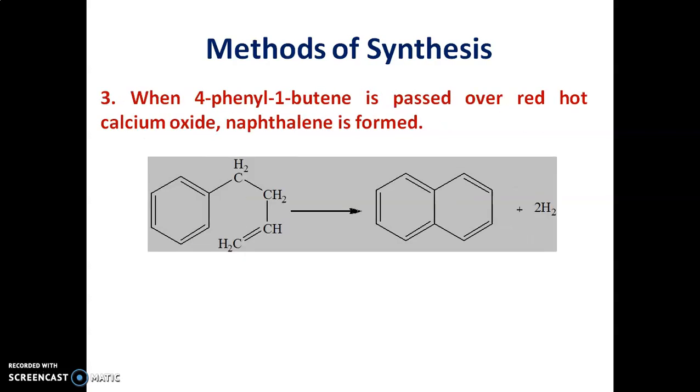The third method for synthesis of naphthalene is by reacting 4-phenyl-1-butanol which is passed over red hot calcium oxide to yield naphthalene.